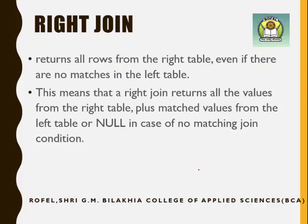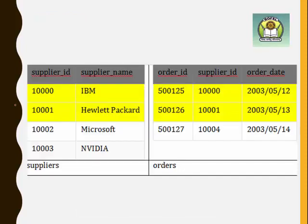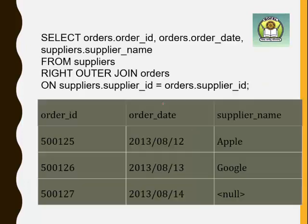Right join or right outer join — it returns common values from both tables plus the exclusive values from the right-side table, not from the left side. The syntax is the same as left join but using RIGHT JOIN. In our example, the two common values are returned, the exclusive values from the supplier table are not included, but the exclusive value from the orders table is returned. Where values are missing, NULL is returned.